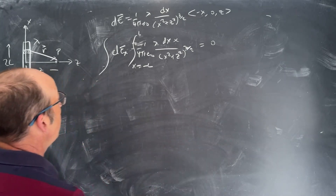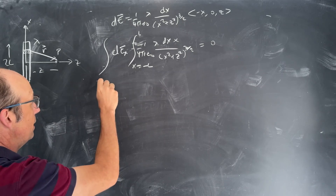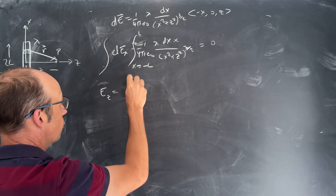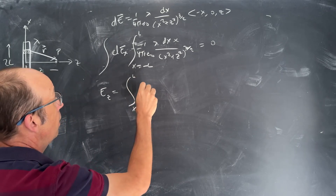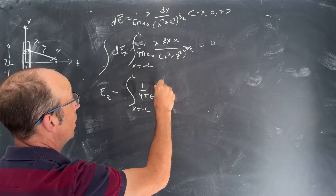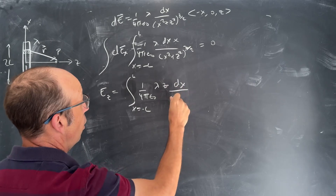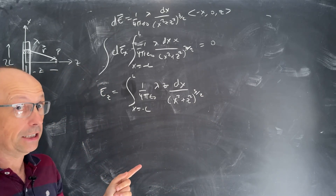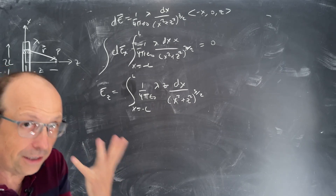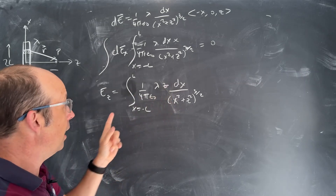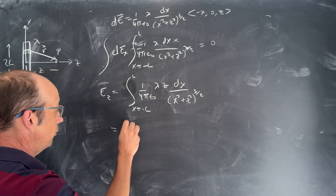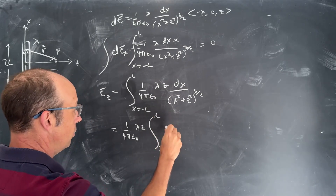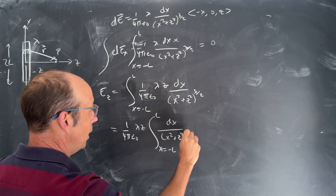Now let's do the z component. Ez equals the integral from x equals negative L to L of 1 over 4 pi epsilon naught, lambda z dx over x squared plus z squared to the 3 halves. Since we're integrating over x, z does not change — it's a constant. So I can pull all of that out front: Ez equals 1 over 4 pi epsilon naught, lambda z, times the integral from negative L to L of dx over x squared plus z squared to the 3 halves.